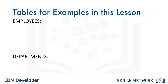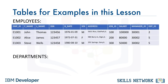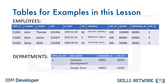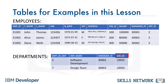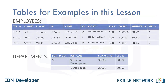Let's consider the employees and departments tables from a previous video. The employees table contains several columns for categories such as employee ID, first name, last name, and salary, to name a few. The departments table contains a department ID, department name, manager ID, and location ID. Some sample data from these tables is shown here. We will utilize these tables for the examples in this video.